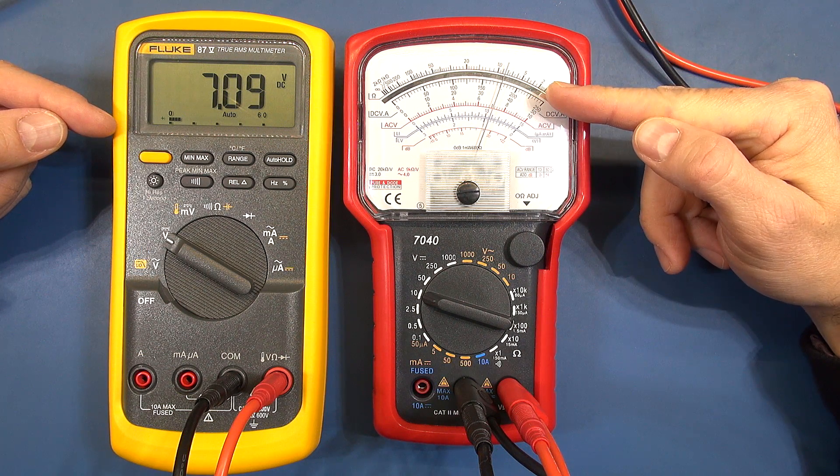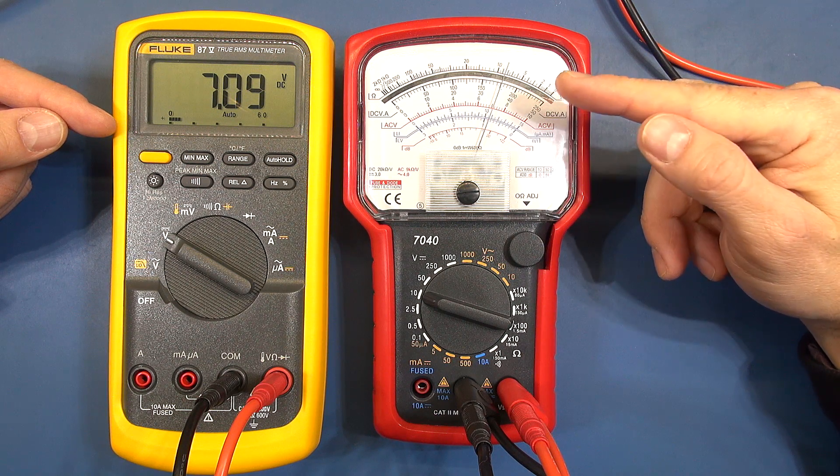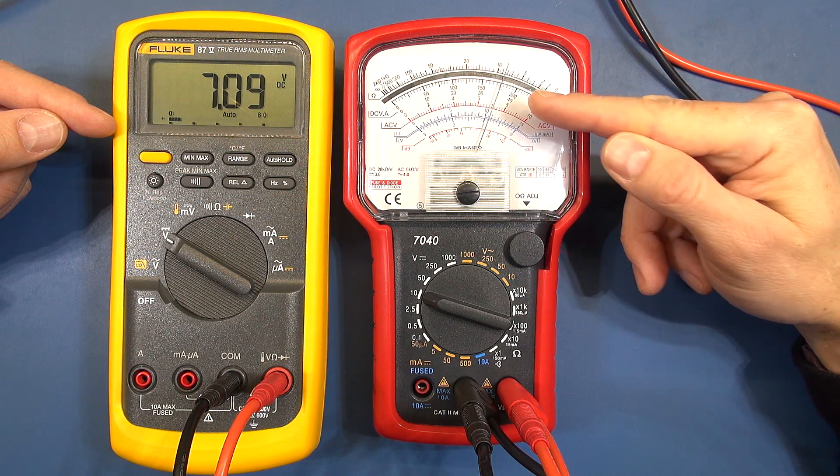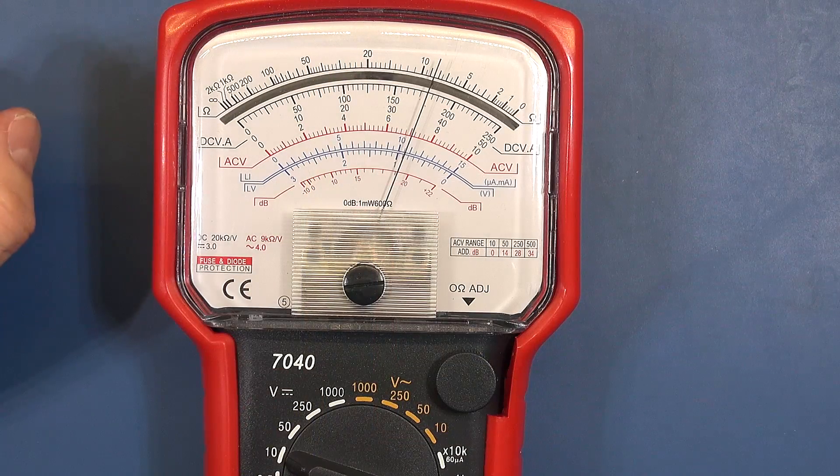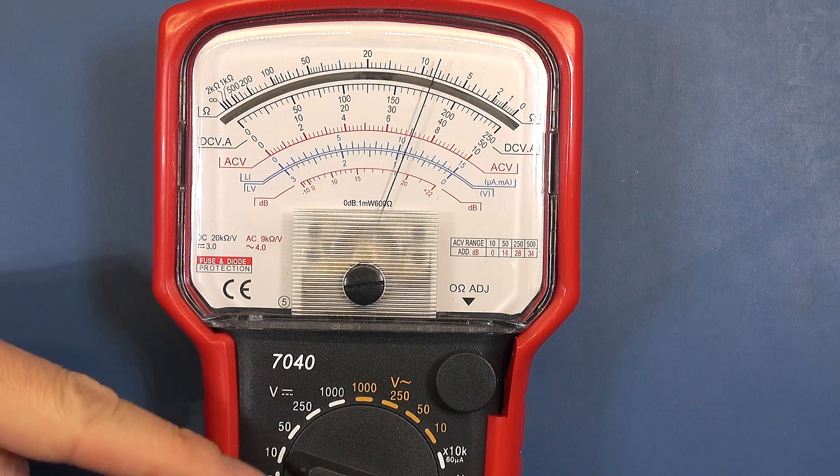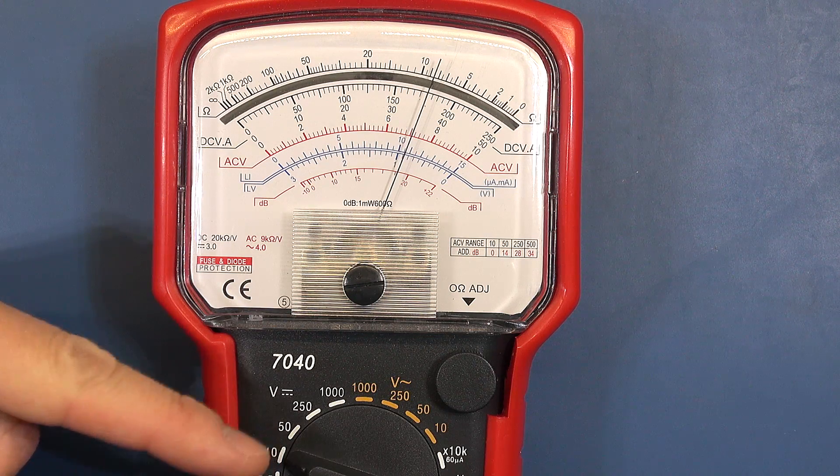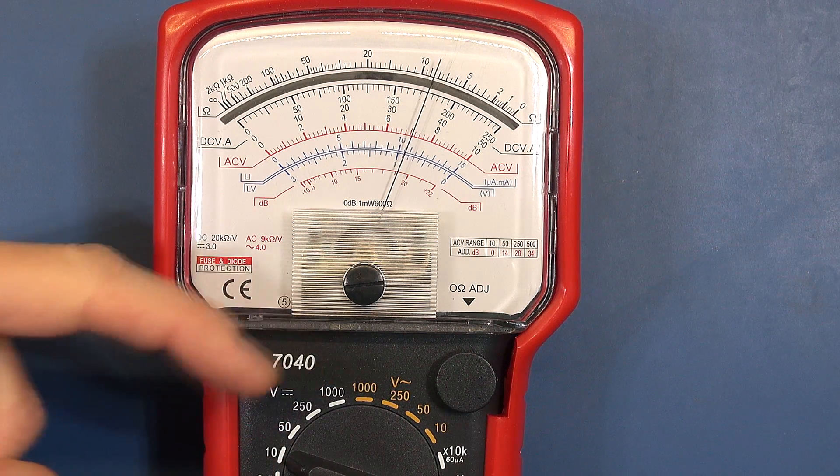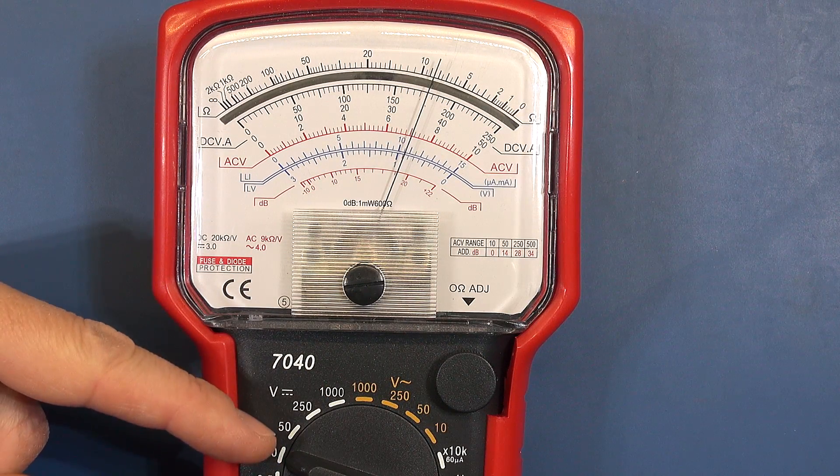Once we get to the analog meter there are a few challenges that we have to overcome. However I'm going to show you a demonstration a little later which will clearly show the advantages of having a needle displaying a reading versus a digital readout. One of the first challenges you have to overcome with the analog meter is that you have to select your range. Now this might be the case for some digital meters which aren't auto ranging but for all analog meters you're going to have to select the range ahead of time and make sure you do it correctly.